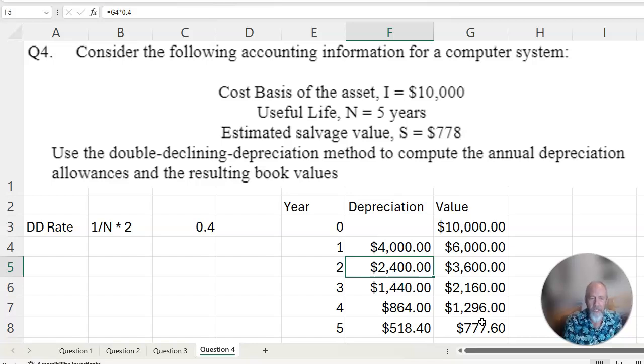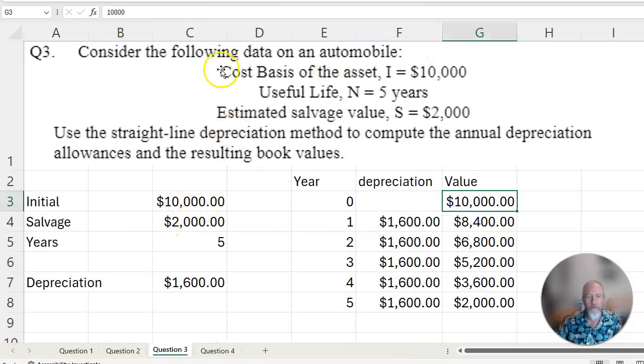By the way, the double declining depreciation is just the commonly used one where the alpha value is 2. However, you could have a declining depreciation using other numbers. Another number that you might use would be 1.5. If you use 1 and you subtract salvage, you've got your standard straight-line depreciation.